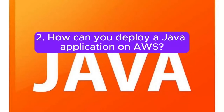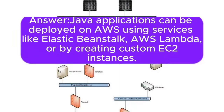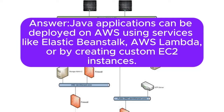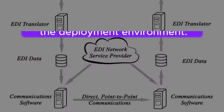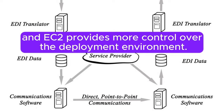Question 2: How can you deploy a Java application on AWS? Java applications can be deployed on AWS using services like Elastic Beanstalk, AWS Lambda, or by creating custom EC2 instances. Elastic Beanstalk simplifies the deployment process, Lambda allows serverless execution, and EC2 provides more control over the deployment environment.